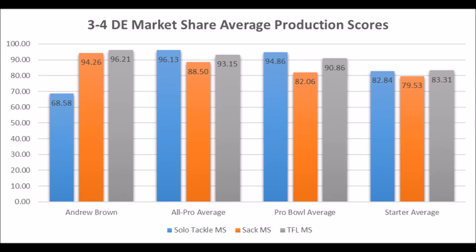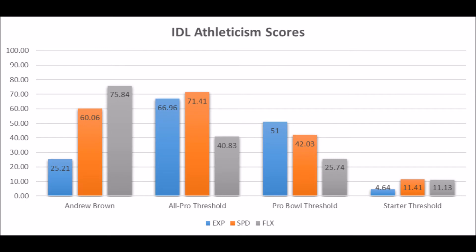Looking at the averages at the position — the average score for All-Pro players, multiple Pro Bowl players, and starting players for 3-4 DNs since the 1989 NFL draft class — as you can clearly see, Andrew Brown's solo tackle data is the only real data point where he is a bit of a concern when it comes to his production data.